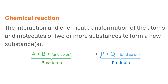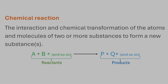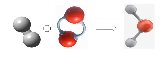A chemical reaction results in the rearrangement of the atoms and molecules of the reactants to form products with new atomic and molecular orientations. This is achieved through the making or breaking of bonds between the constituting atoms.